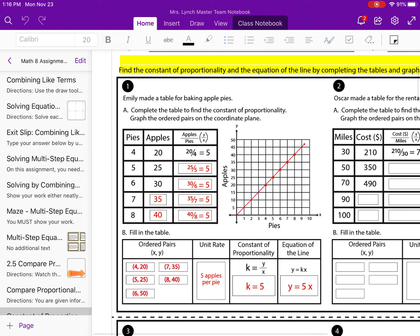Okay, so let's look at this first one that's done for you. It says Emily made a table for baking apple pies. Complete the table to find the constant of proportionality, then graph the ordered pairs on the coordinate plane. So again, there's several things that are happening. We have a table over to the left, we have a graph to the right of it, and then at the bottom, we fill in the table with the missing pieces of information.